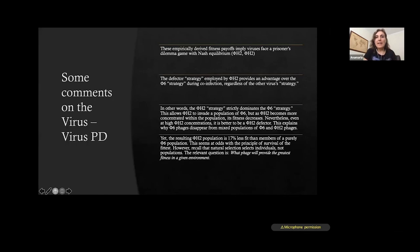And the fitness levels are estimated experimentally using the data from Turner and Chao, and we normalize that one. This would be the payoff matrix that we use for the virus prisoner's dilemma with different phenotypes, with Phi-6 and Phi-H2. The empirically derived fitness payoffs imply that the viruses face the same prisoner's dilemma game with a Nash equilibrium. The defector strategy that is employed by Phi-H2 provides an advantage over the Phi-6 strategy during the co-infection, regardless of the other virus strategy. So just in a nutshell, the Phi-H2 strategy strictly dominates the other strategy. And this allows for the Phi-H2 strategy to, for the Phi-H2 to invade the population of Phi-6.